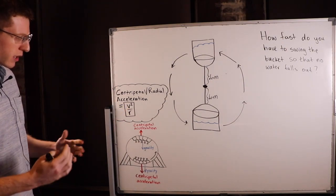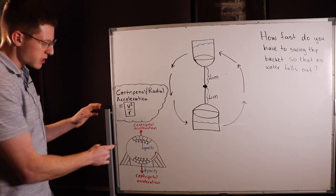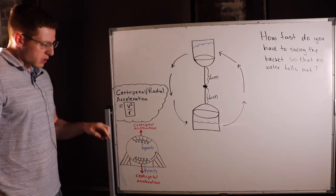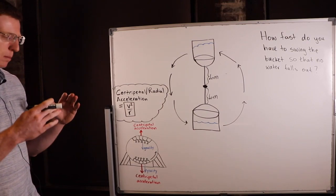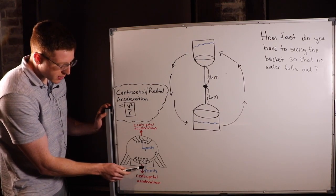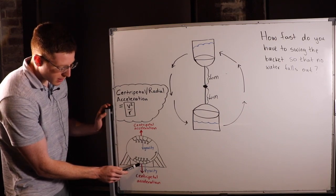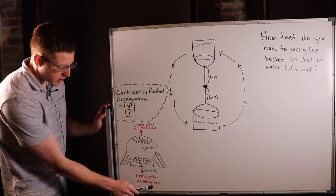The most familiar example everyone probably has of this is a roller coaster loop. At the bottom of a roller coaster, you feel heavy in your seat, like you're being pulled down. That's because you're experiencing not only the usual gravity, but an extra centripetal acceleration.